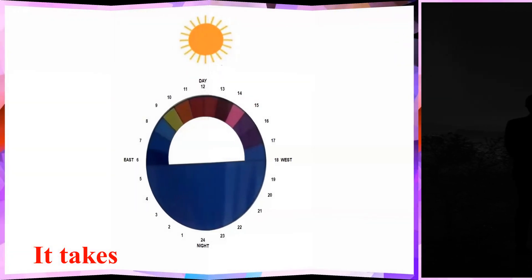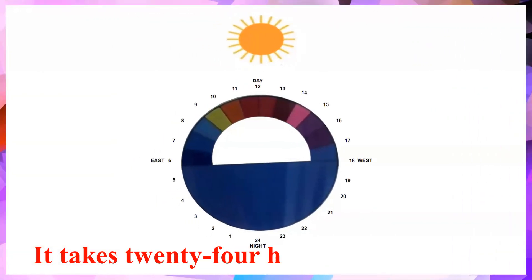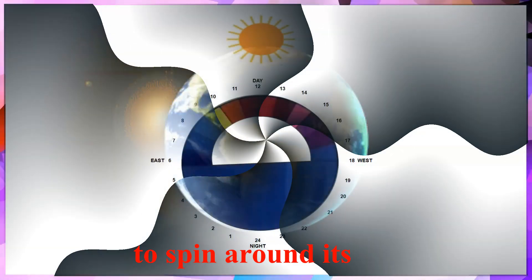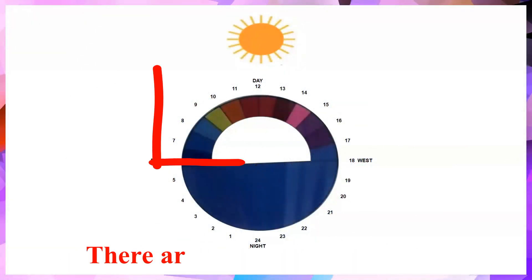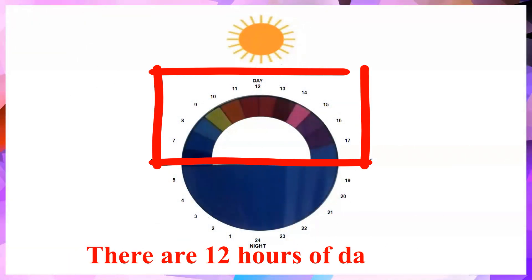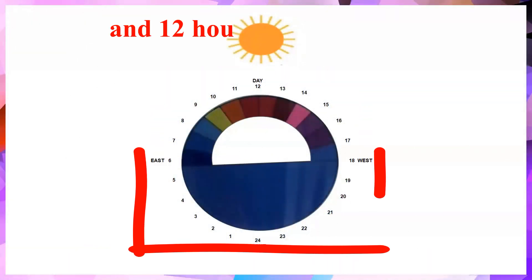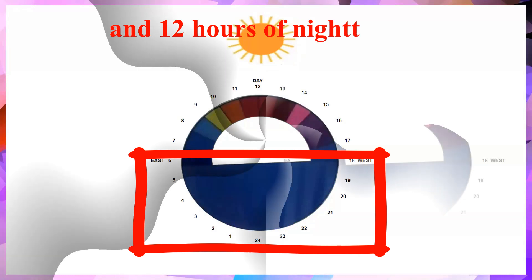It takes 24 hours for the earth to spin around itself. There are 12 hours of day time and 12 hours of night time.